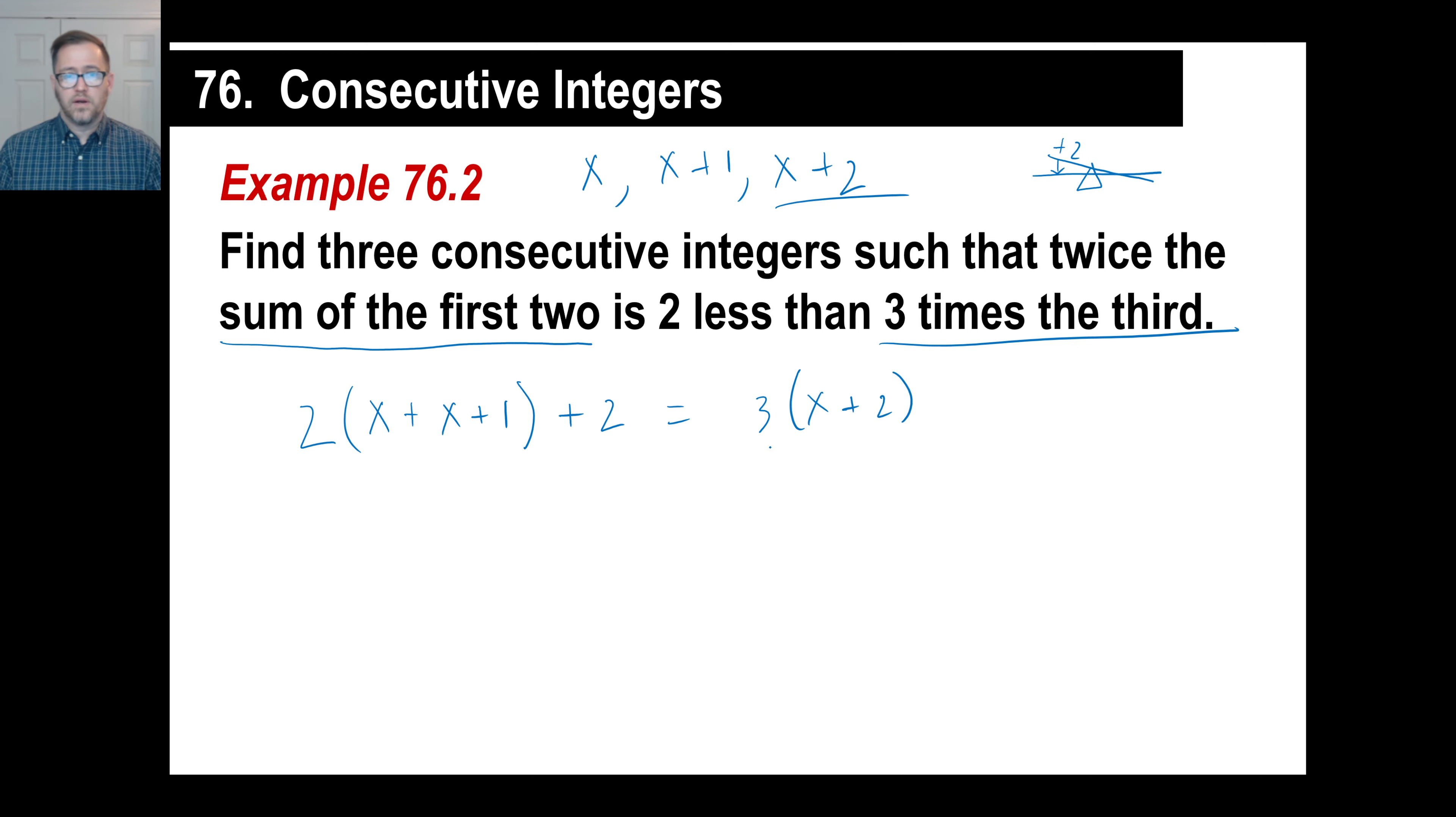Now, again, if you saw this one written like it is in blue across there in your algebra book, you'd go, ah, no problem. I know how to do this. That's going to be 2x. Solve this. So, 2 times 2x is 4x. 2 times 1 is 2 plus 2. Now, 3 times x is 3x. 3 times 2 is 6.